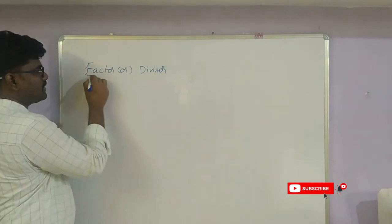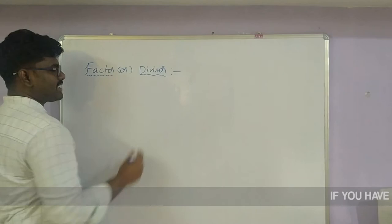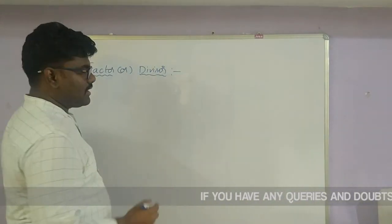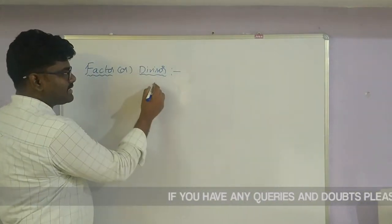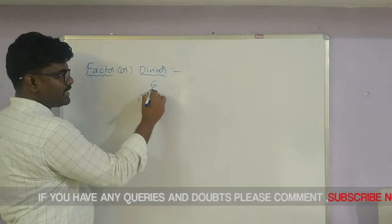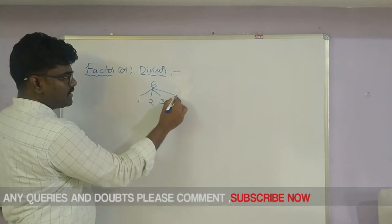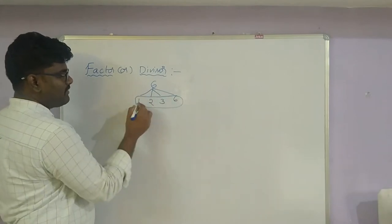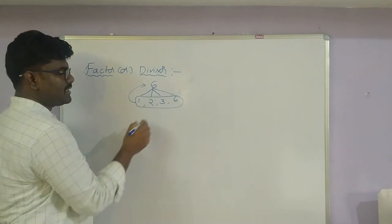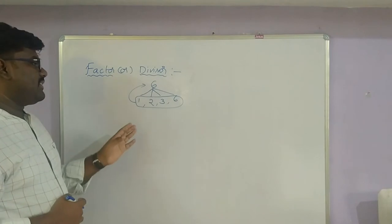What is meant by a factor? When we take any number, for example 6, it is divisible by 1, it is divisible by 2, it is divisible by 3, and it is divisible by 6. These numbers are called factors of 6. So the factors of 6 are 1, 2, 3, 6.